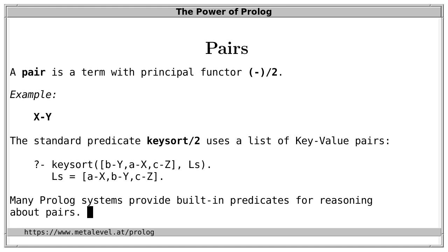Prolog systems often provide many more built-in predicates for reasoning about pairs, well beyond what the standard requires. These predicates often adopt the naming convention from keysort, calling the first argument of each pair the key and the second argument the value.